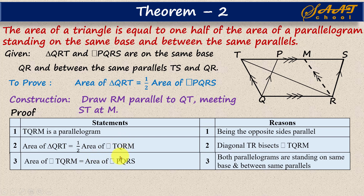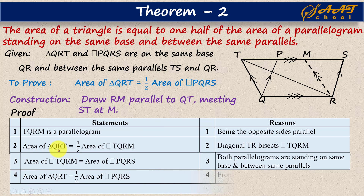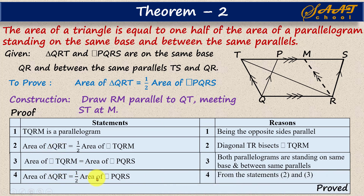Now comparing statements 2 and 3: parallelogram TQRM equals PQRS, so we can replace TQRM with PQRS because they are equal. Therefore, in statement 4, we can write: area of triangle QRT equals half the area of parallelogram PQRS. This follows from combining statements 2 and 3, simply replacing one parallelogram with the other.